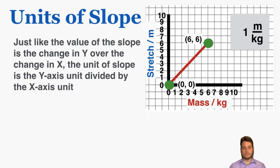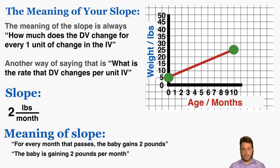Just saying that unit out loud — meters per kilogram — gives you some idea about what the meaning of the slope itself is. The meaning of the slope is always how much does the dependent variable (DV) change for every one unit of change in the independent variable (IV). Another way of saying that is: what is the rate that the DV changes per unit IV.